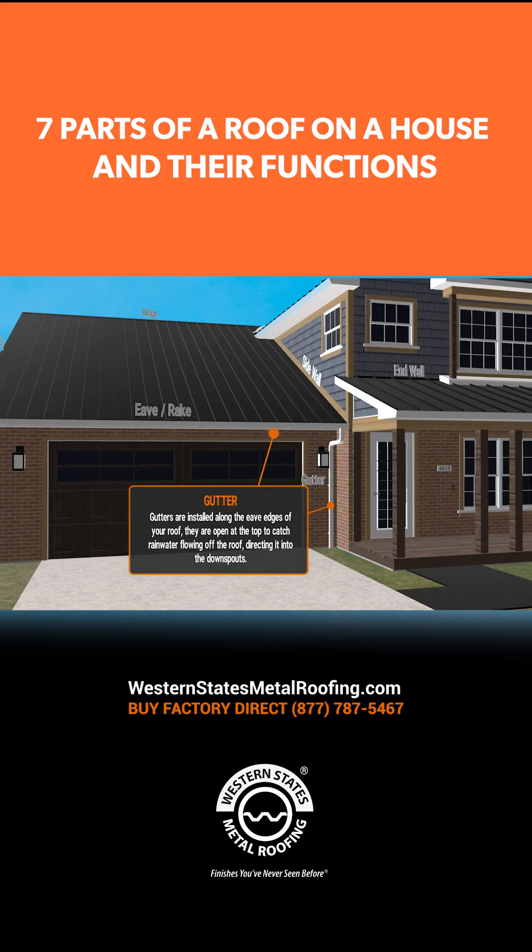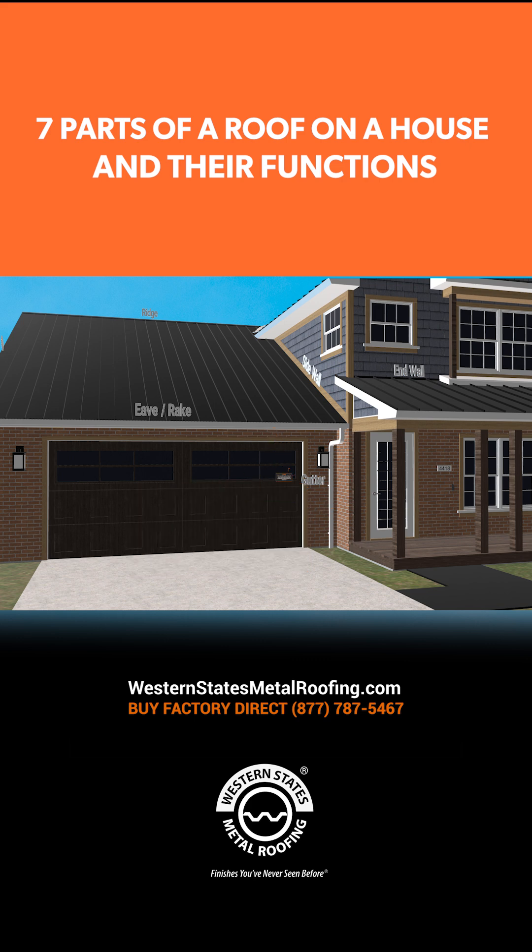Gutters are installed along the eave edges of your roof. They are open at the top to catch rainwater flowing off the roof, directing it into the downspouts.